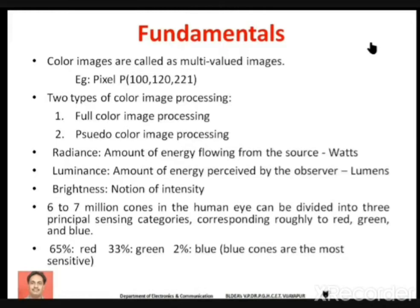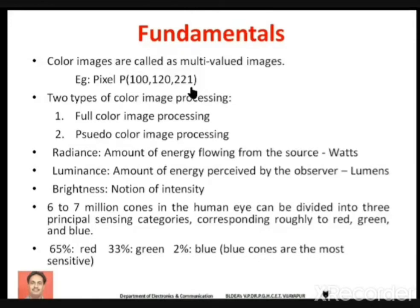To generate a particular color image pixel, we have to mix up more than one color. Generally, to represent a color image, we are going to use red, green, and blue colors. You can represent any color by using these three primary colors — red, green, and blue. For example, assume you have a pixel P. Its color might be generated by a mixture of red, green, and blue. Red might have an intensity of 100, green an intensity of 120, and blue an intensity of 221. This is why color images are also termed as multi-valued images, as each pixel is associated with multiple values.